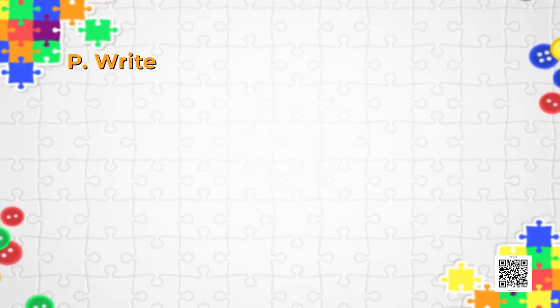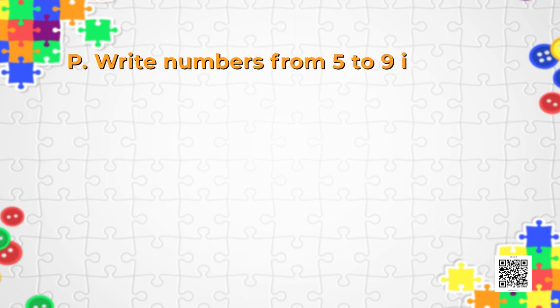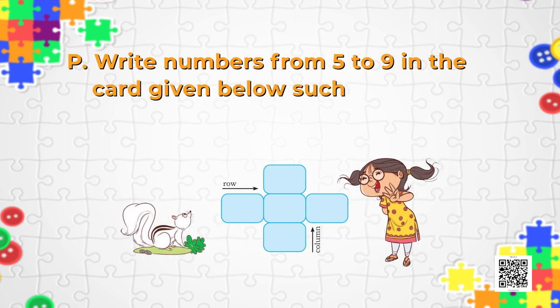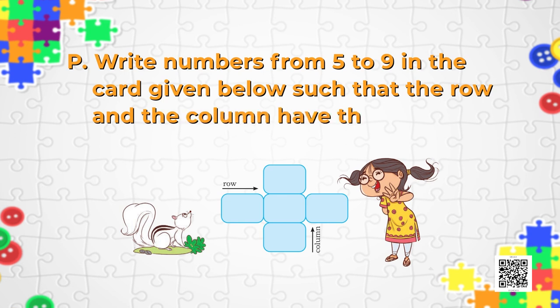Now it's time for puzzle P. Write numbers from 5 to 9 in the cards below such that the row and the column have the same total. Can you do that? The totals just have to be the same — enjoy it!